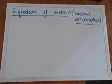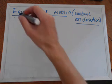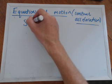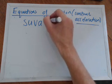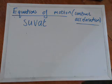Hello. In this video we'll be looking at the equations of motion for objects moving with constant acceleration. They're often known as the SUVAT equations.